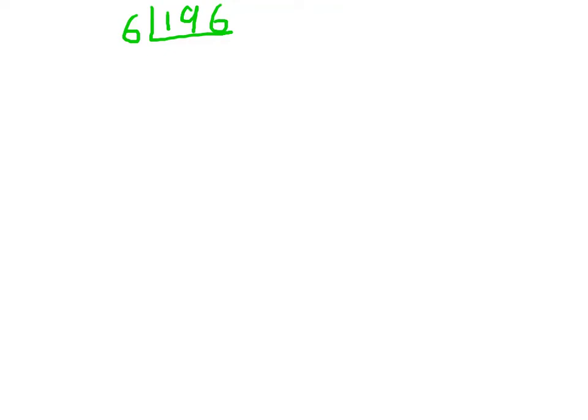A good method for dividing bigger numbers is the chunking method. Here I have 196 divided by 6. All I need to say to myself is how many lots of 6 go into 196. And if you're not sure, you start with an easy amount.